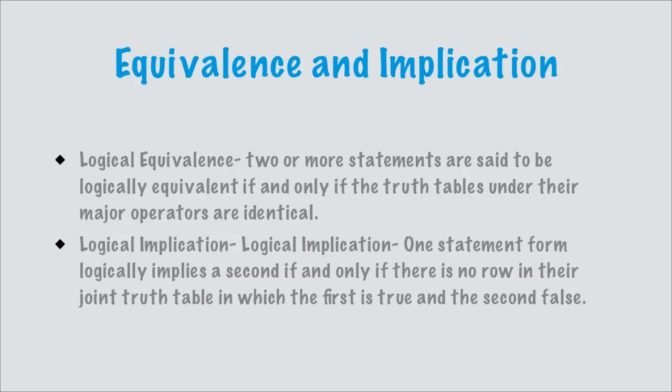Another thing we can do with truth tables is determine properties between statements or sets of statements. Two statements are logically equivalent if and only if the truth tables under their major operators are identical. This means if I substitute in various values for p, q, and r in both statements, underneath their main connective they will have exactly the same truth value. It simply means whatever I substitute in for each statement, they will always be identical under the main connective.